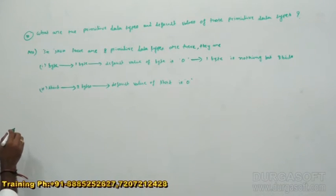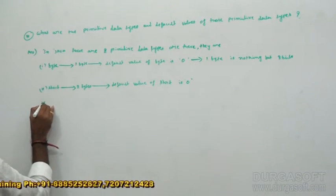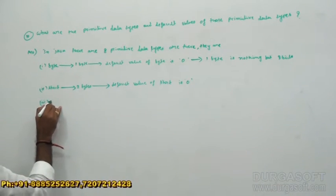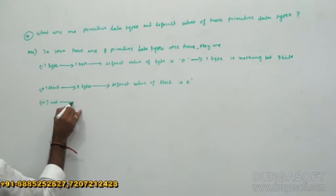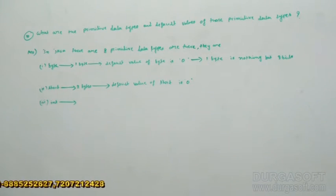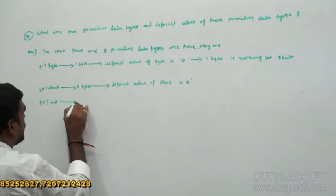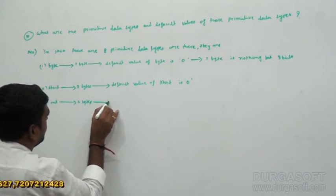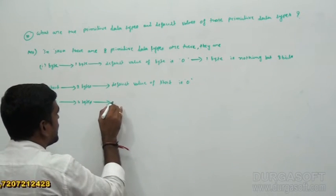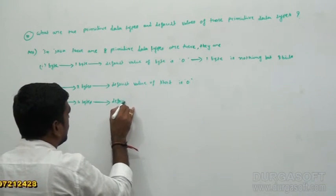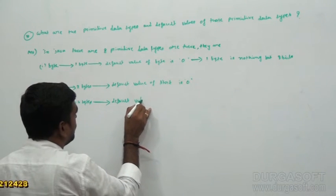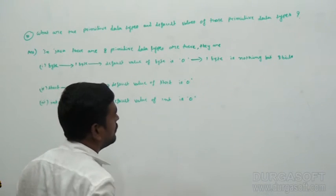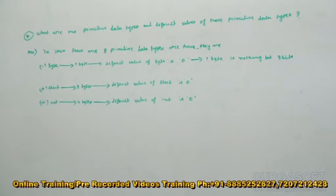The third data type is integer. Integer data type is going to be occupied by four bytes of information. The default value of int is zero.